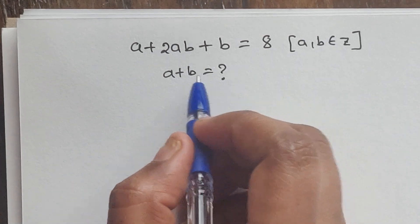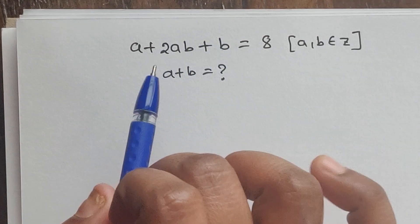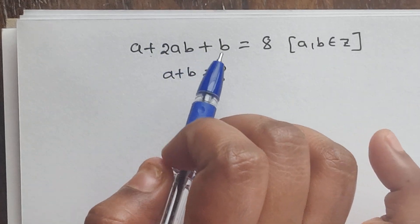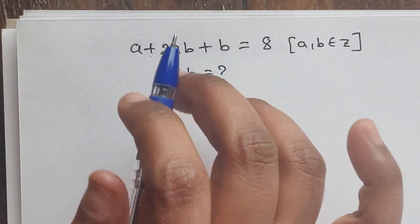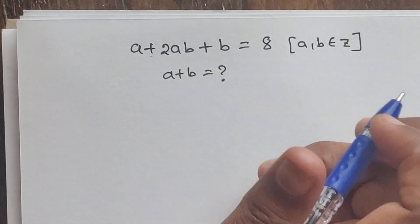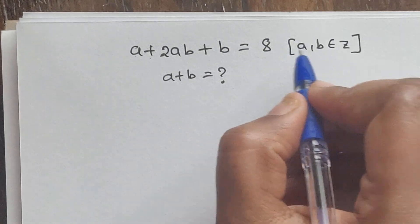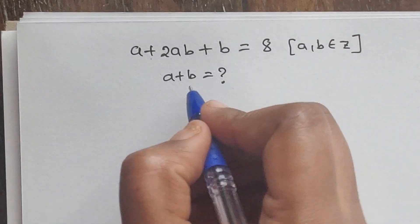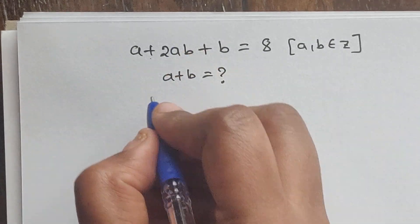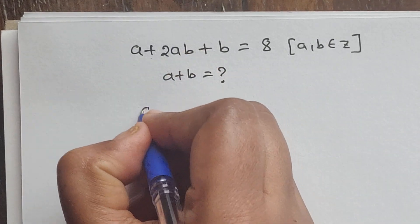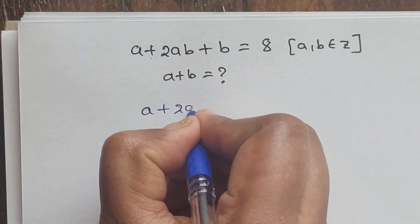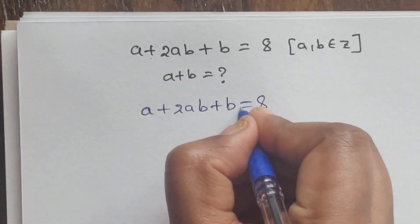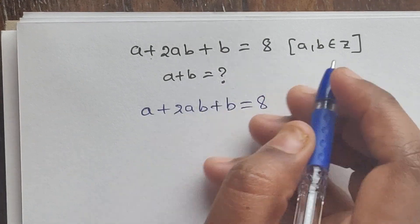Hello everyone, welcome back to our channel. Here we have one problem. The question is: given a plus 2ab plus b equals 8, and a and b are both integers, so a plus b is what? We have given a plus 2ab equals 8, and we have to find the value of a plus b.